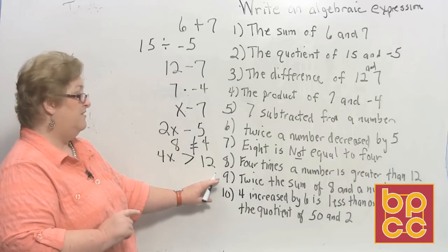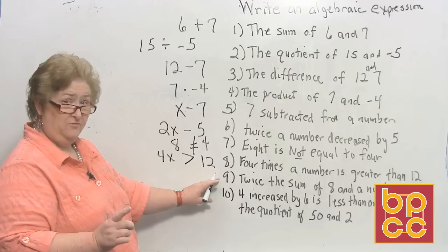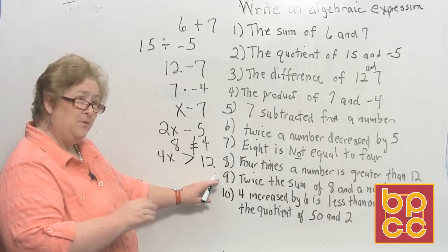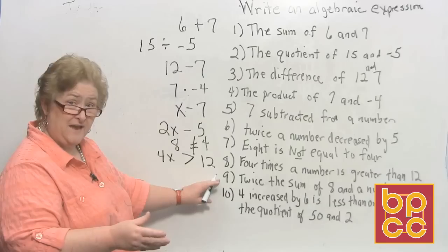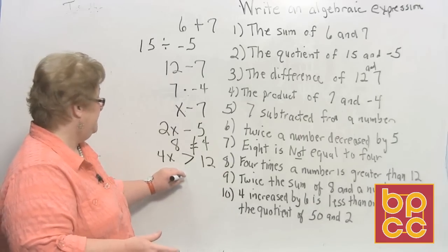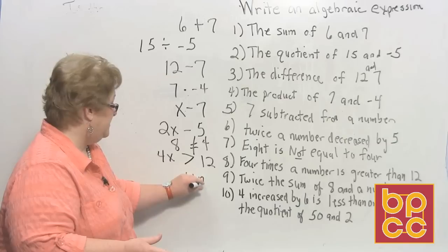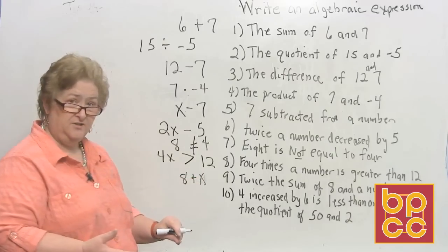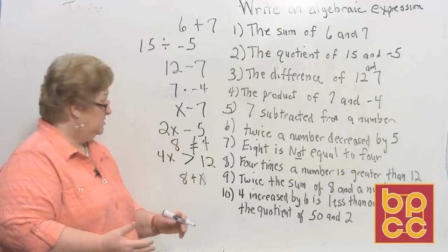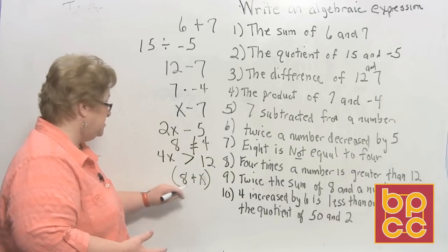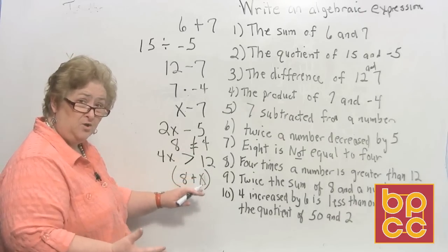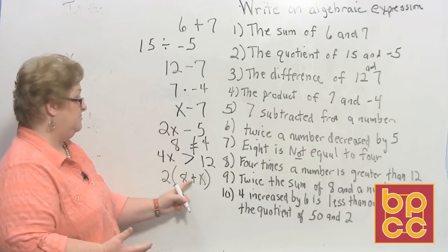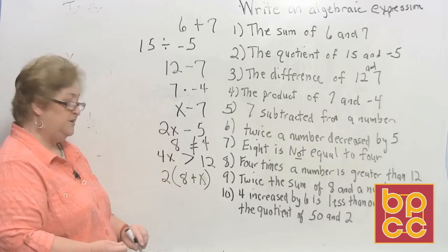Watch out for number 9: twice the sum of 8 and a number. You've got to be very careful. I can't double the sum until I write what kind of problem it is. Sum means addition, so I need to write 8 plus x first. Then, since it's twice the sum, I put this in parentheses and multiply by 2. So the expression is 2 times the quantity (8 plus x).